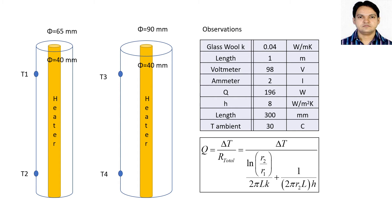Since there is no forced circulation of air, the convective heat transfer coefficient is taken as 8 W/m²K. Once steady state condition is achieved and temperature is measured, the heat transfer equation for this case involves both conduction and convection. Delta T is the temperature difference between surface temperature and ambient air temperature, and R total is the sum of conduction resistance and convection resistance.